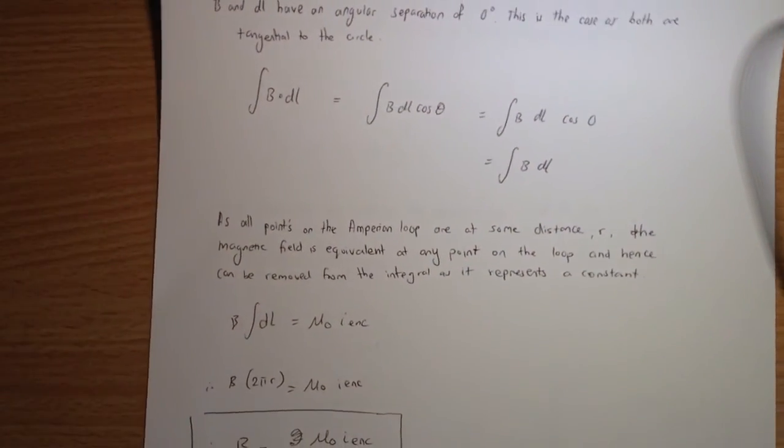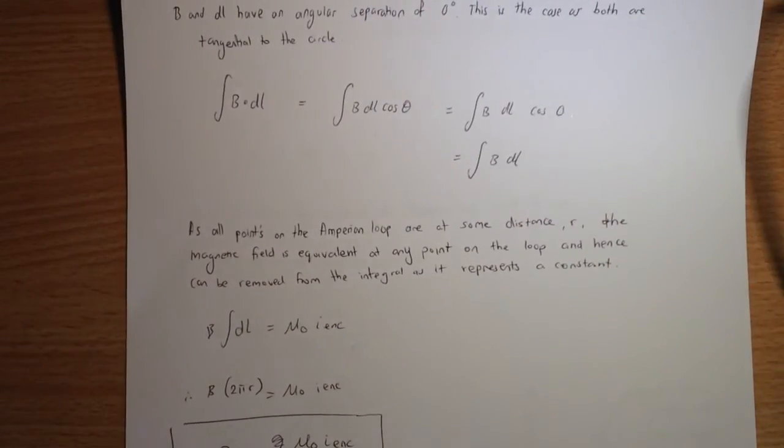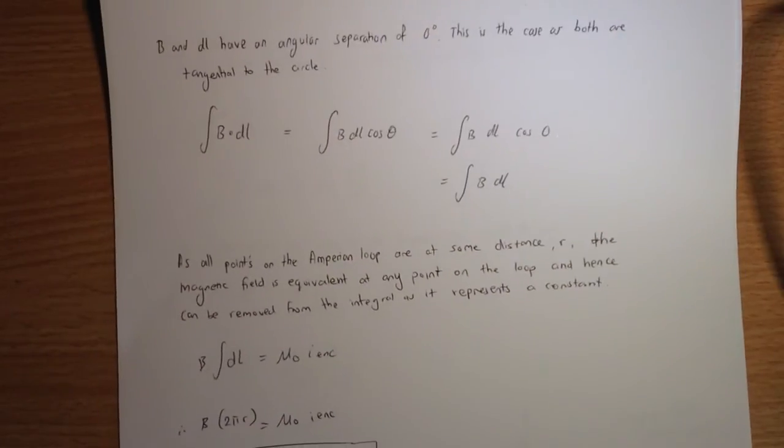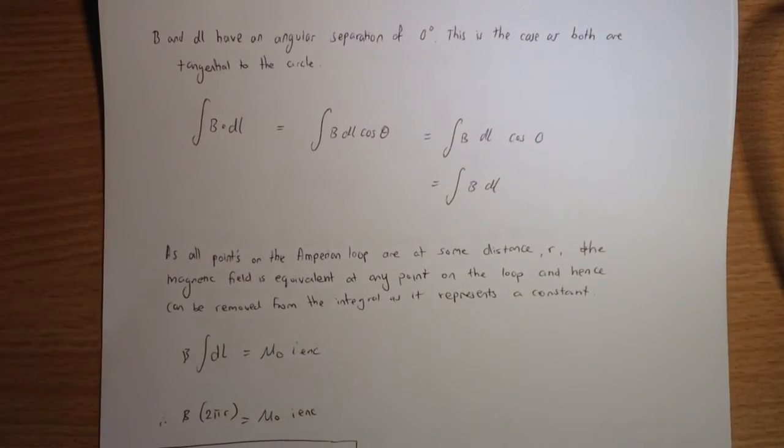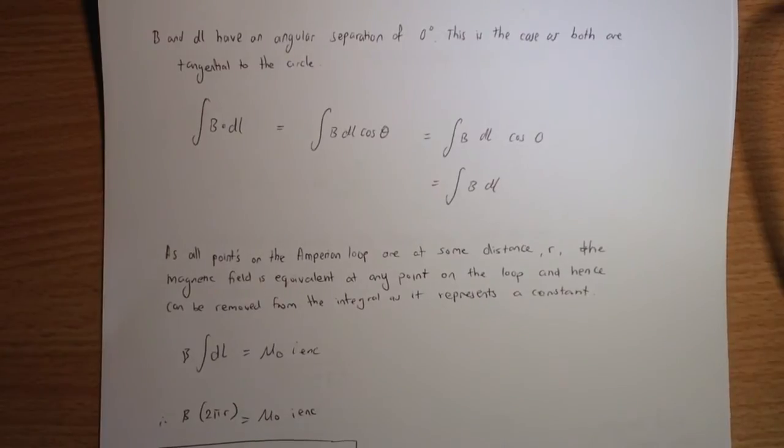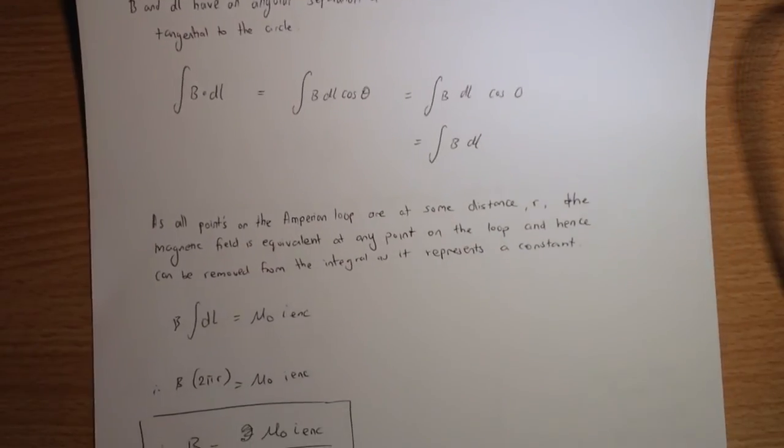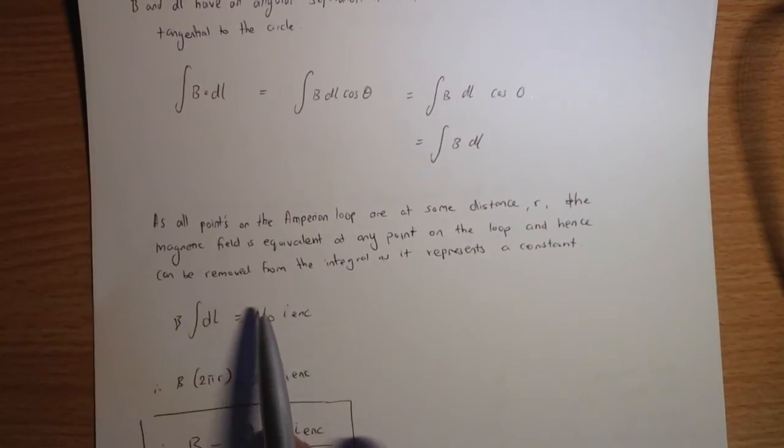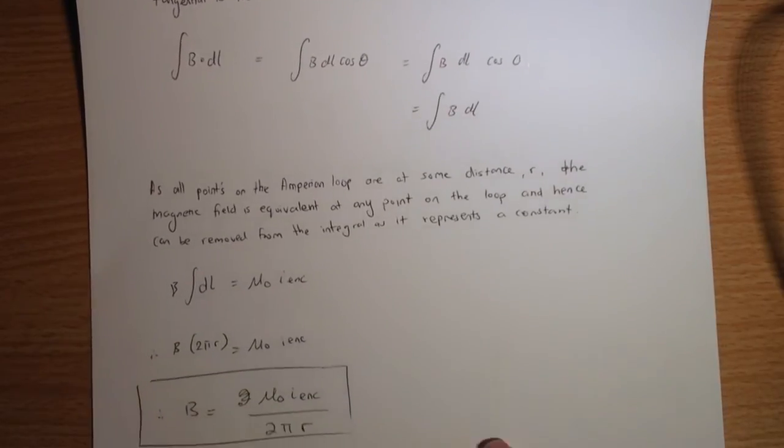Now, as all the points on the Ampereian loop are the same distance r, the magnetic field is equivalent at any point on the loop, our Ampereian loop that we set up before, and consequently, we can factor out b as being a constant. The magnetic field is constant at any point on the Ampereian loop, so we take it outside of the integral. Consequently, we end up with b integral dl equals mu naught, which is the permeability constant of 4 pi times 10 to negative 7, i enclosed, where i enclosed is the enclosed current.